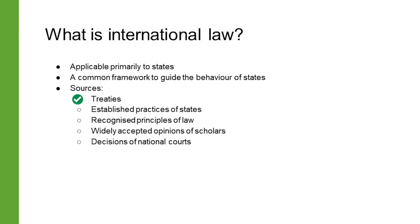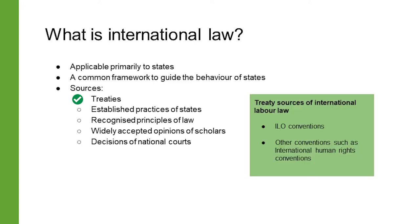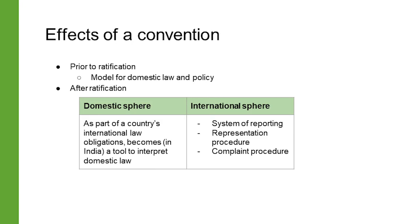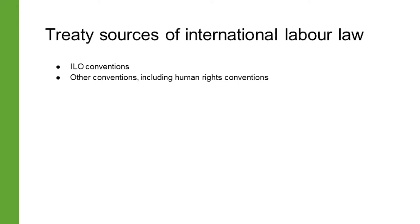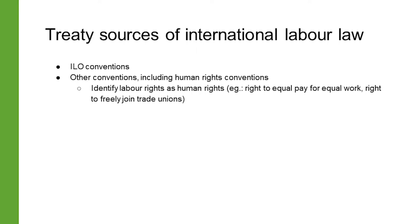Much of international labor law can be found in international treaties, including the conventions of the International Labor Organization. International treaties can play a role in the interpretation of national law, and even if a country has not ratified an international treaty, it can provide some aspirations for national law. Apart from the conventions of the ILO, a number of United Nations human rights conventions are also sources of international labor law. Of the many rights and obligations conferred by these UN treaties, some apply specifically in the context of employment, such as the right to equal pay and the right to join and form trade unions.